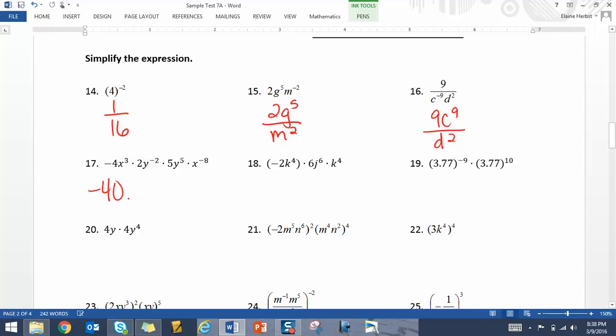Negative 40. Let's see. We get x to the negative fifth y to the third. And we need to move the x to the bottom. So it's negative 40y to the third over x to the fifth.